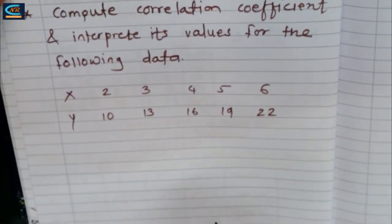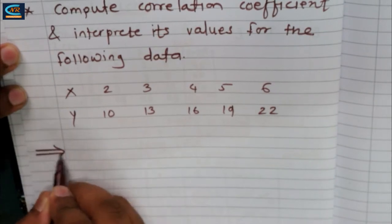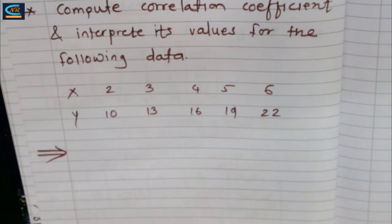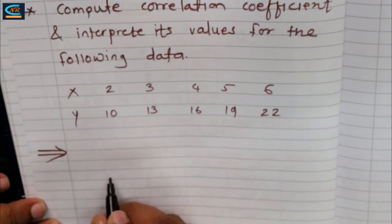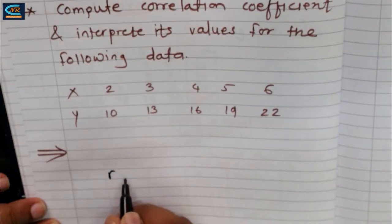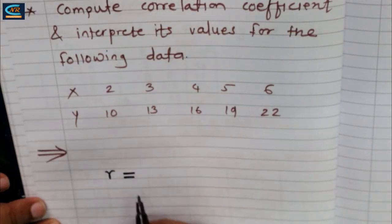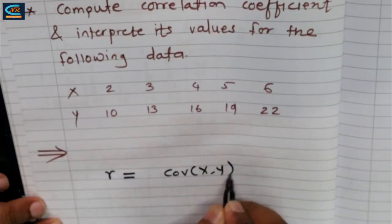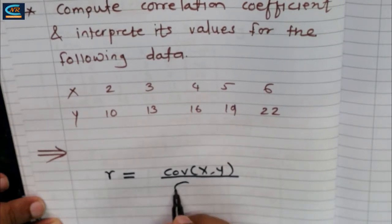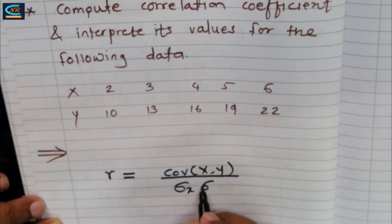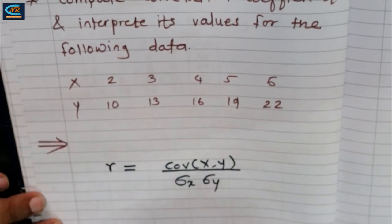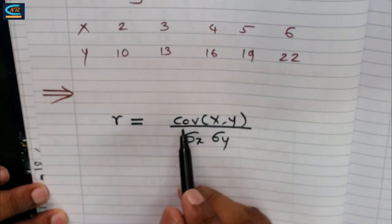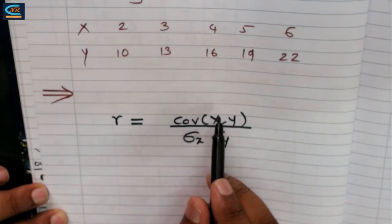To find out the correlation coefficient, we consider the formula. The correlation coefficient is denoted by the letter R, which is the ratio of the covariance between x and y to the product of the standard deviation in x and standard deviation in y.